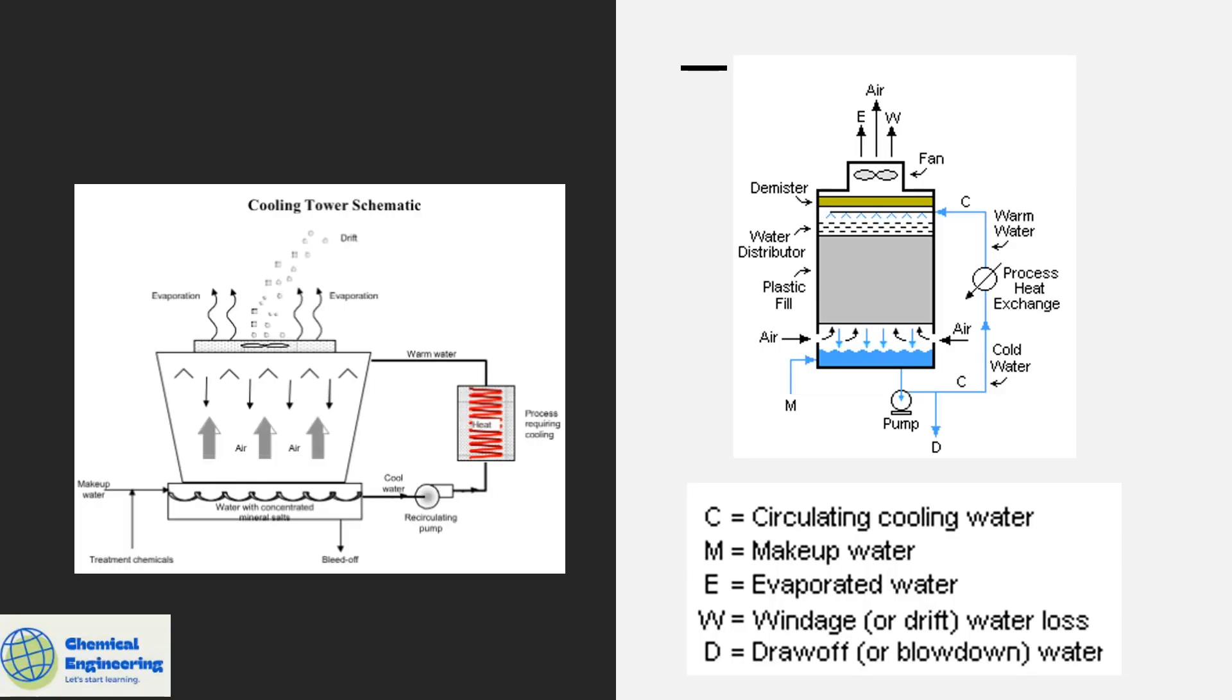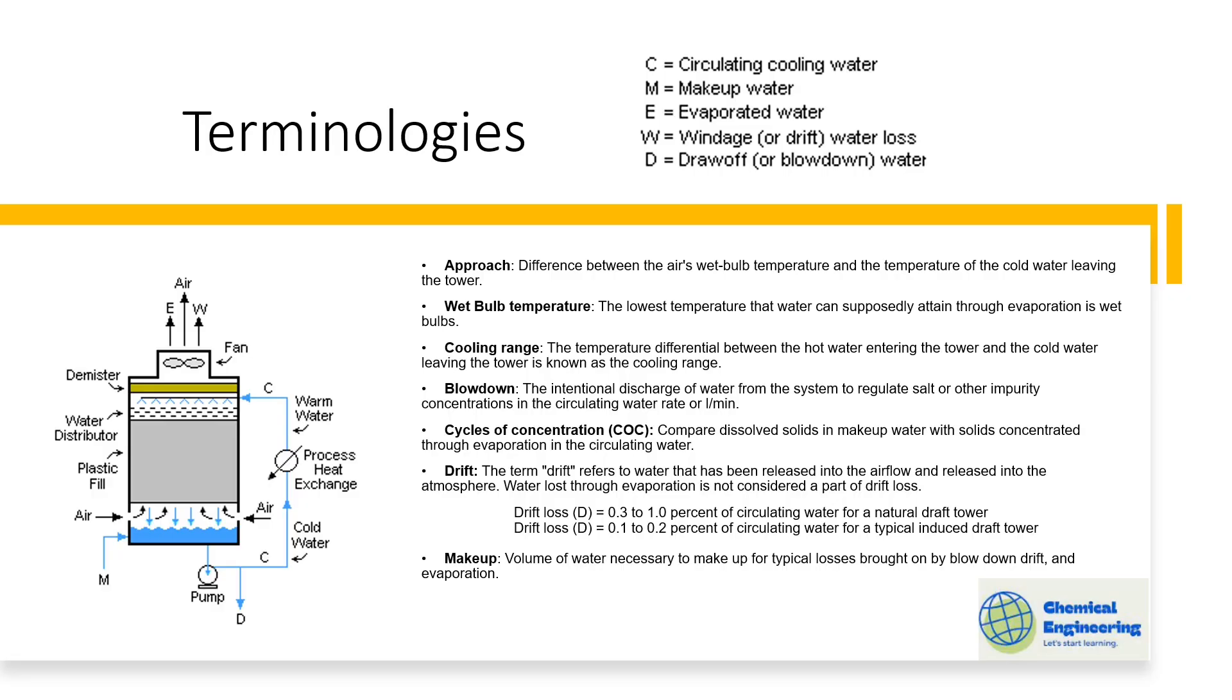Let's define some few terminologies. Approach, it's the difference between the wet bulb temperature and the cold water leaving the cooling tower back into our system temperature. The wet bulb temperature is the lowest temperature that the water can supposedly attain through evaporation.